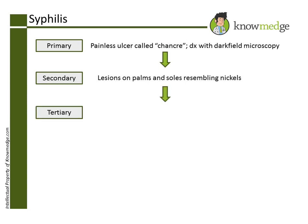Tertiary syphilis, also known as neurosyphilis, is associated with aortitis and neurological manifestations. Tabes dorsalis is a condition where the patient has a foot drop and a wide-based gait. Choice A is incorrect because it describes tabes dorsalis with secondary syphilis, whereas it is actually a part of tertiary or neurosyphilis.